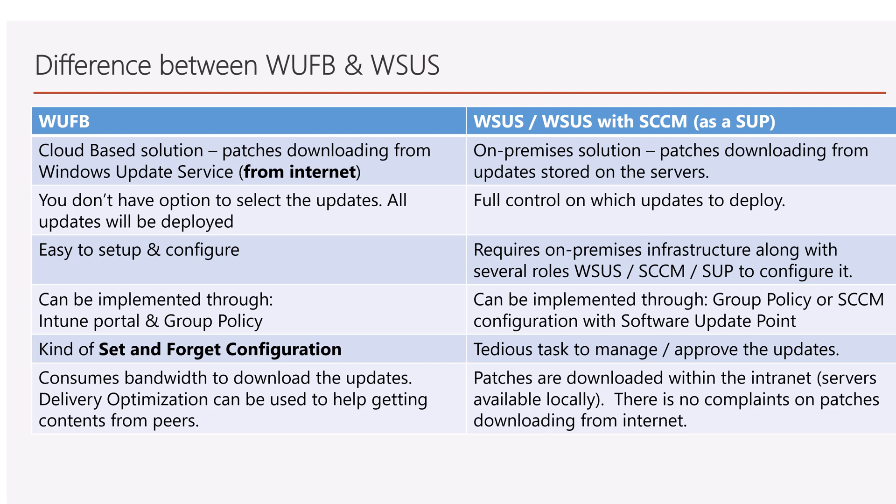Windows Update for Business is very easy to set up and configure — truly a set-and-forget solution that doesn't need ongoing management. WSUS, on the other hand, is a tedious monthly task. You need on-premises infrastructure, a server role installed, and group policy or local policy configured to point devices to the WSUS server. It can also be managed through SCCM's software update point, making it a more complex setup overall.